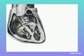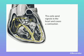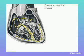A network of specialized muscle cells is found in the heart's walls. These muscle cells send signals to the rest of the heart muscle, causing a contraction. This group of muscle cells is called the cardiac conduction system.